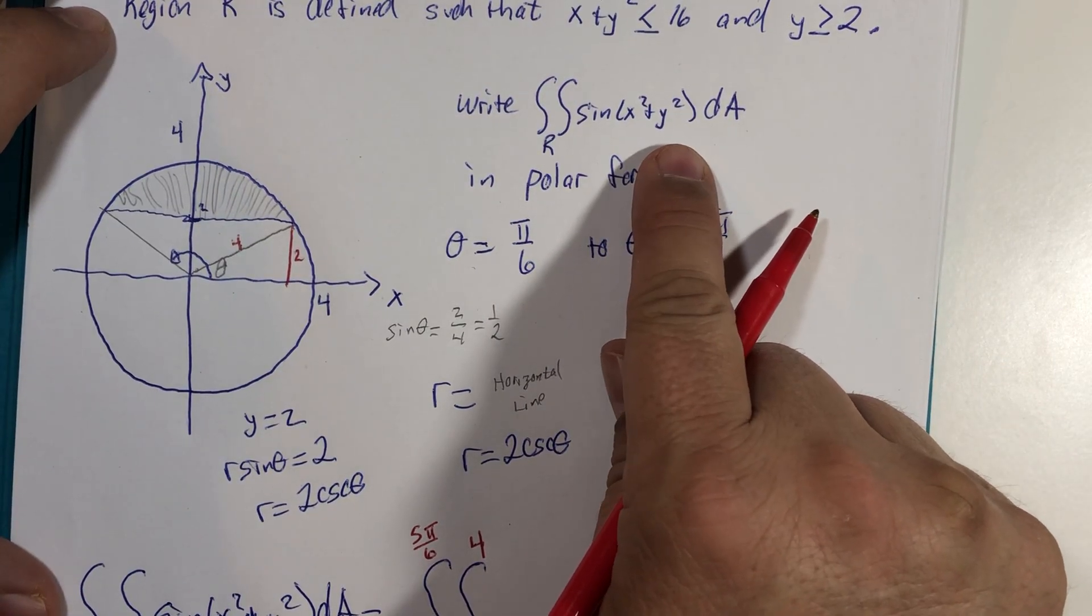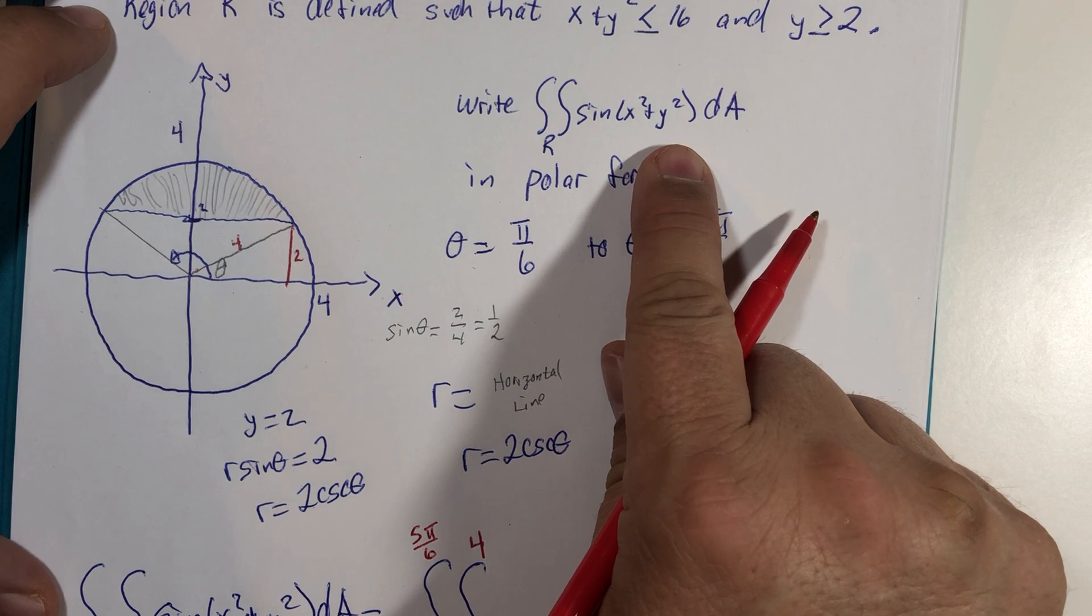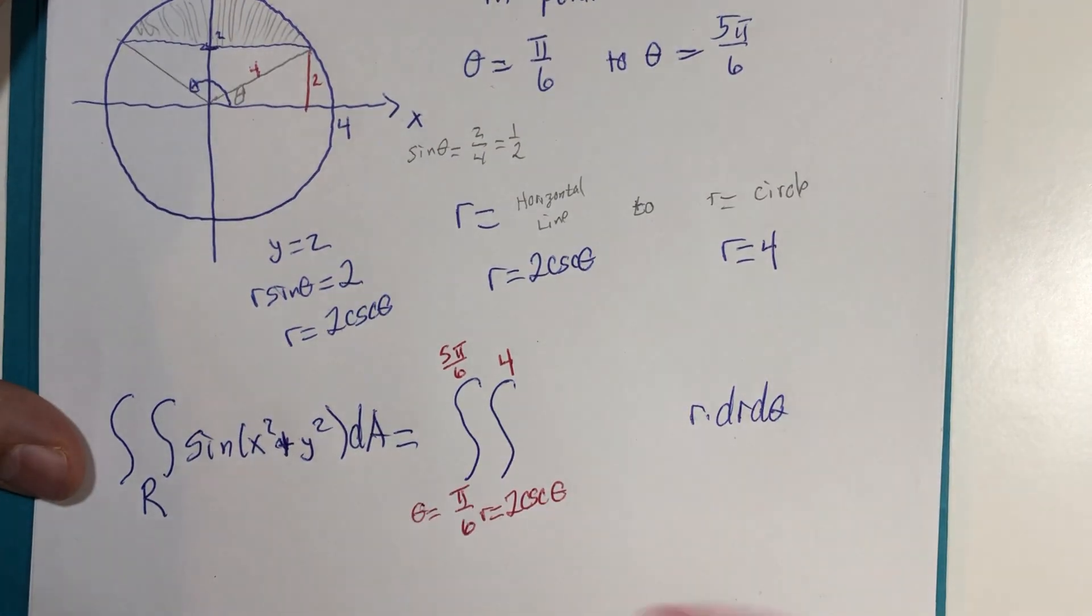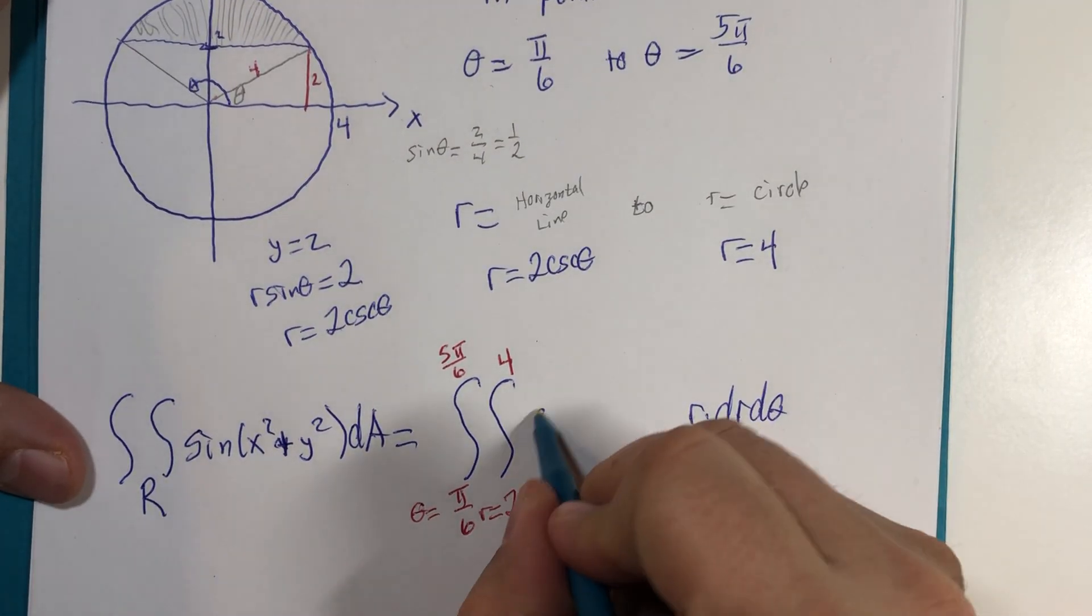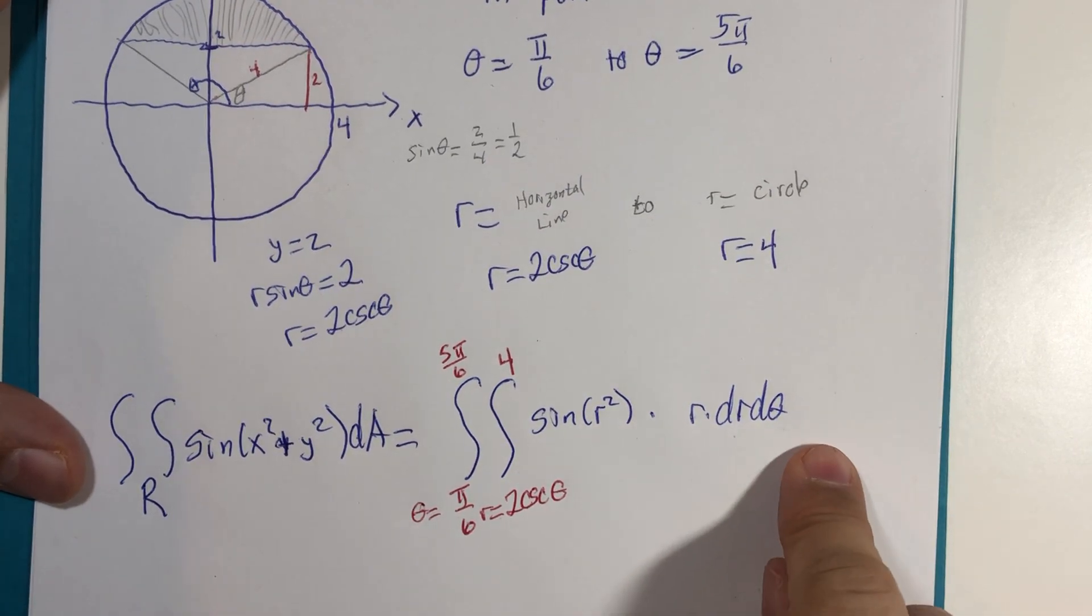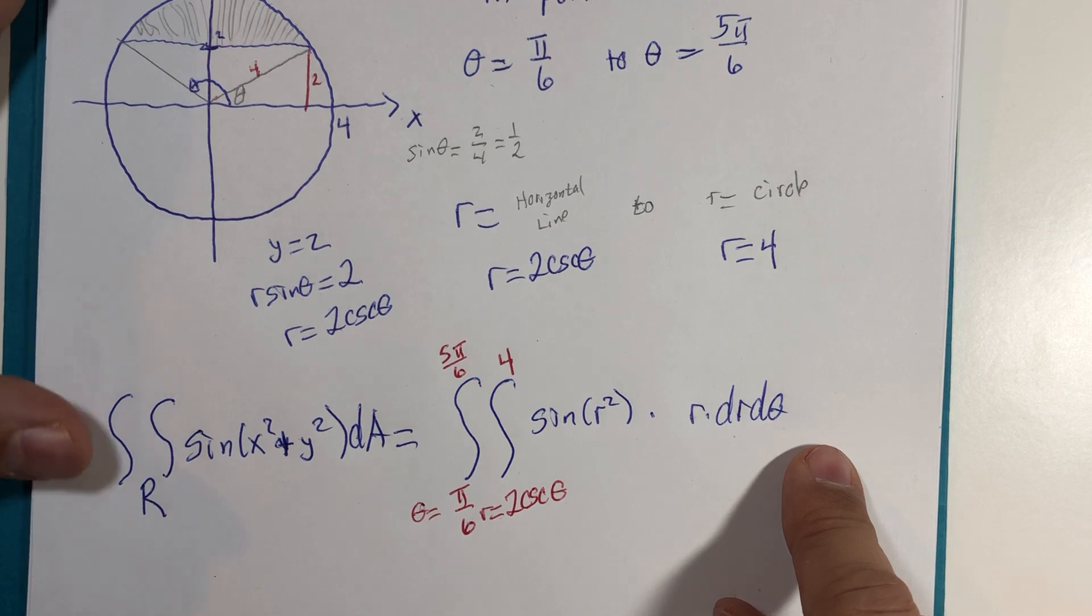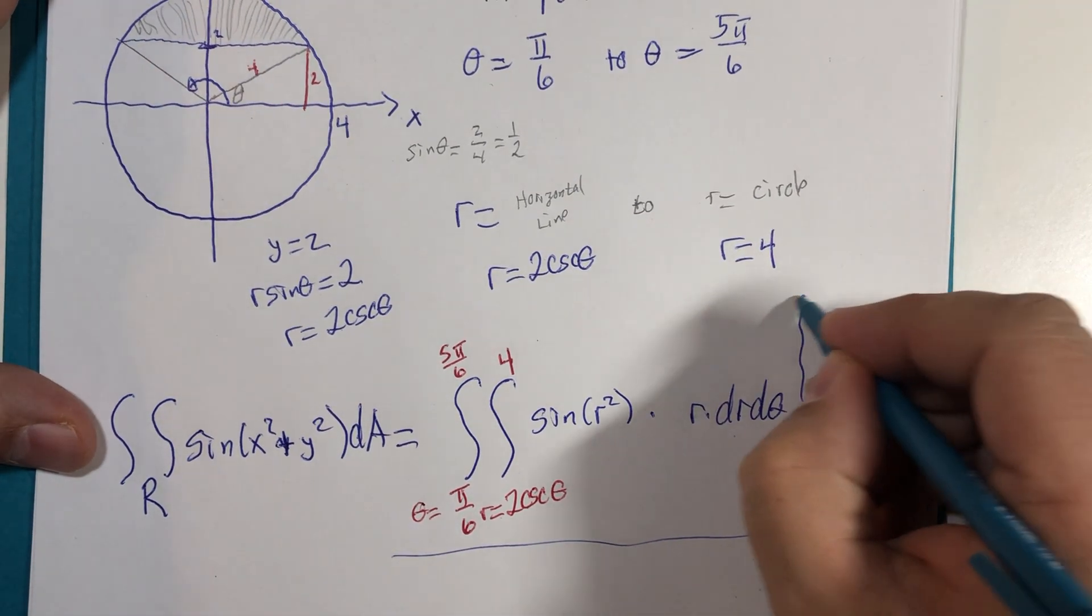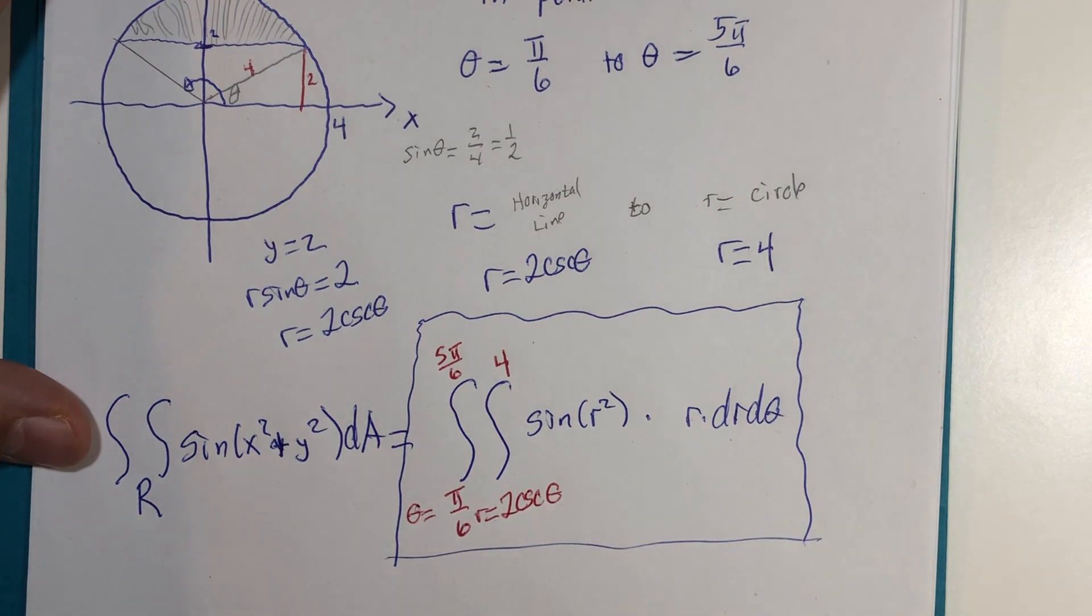x squared plus y squared cannot remain in our polar integral. X squared plus y squared is r squared, so we have sin of r squared times r dr d theta. I think you will find that if you began to integrate this, you would have some success followed by a challenge that may or may not be something that integrates in a standard form. So my directions were just to write it in polar form. So there we have it. Until next time.